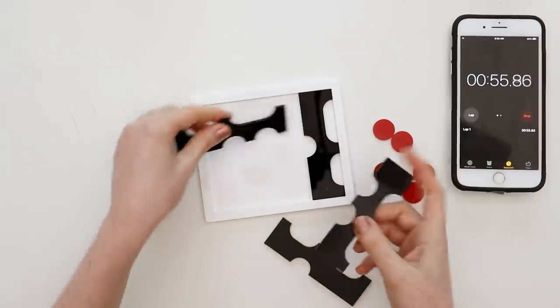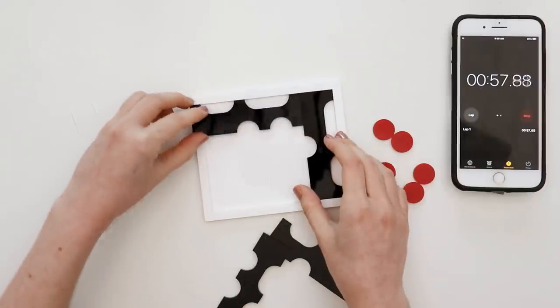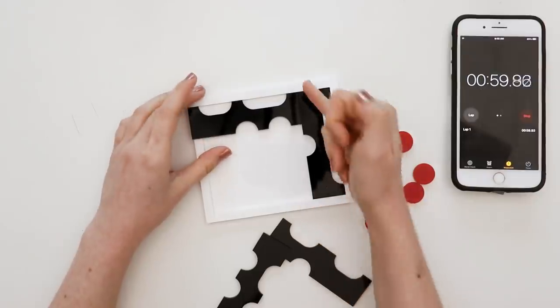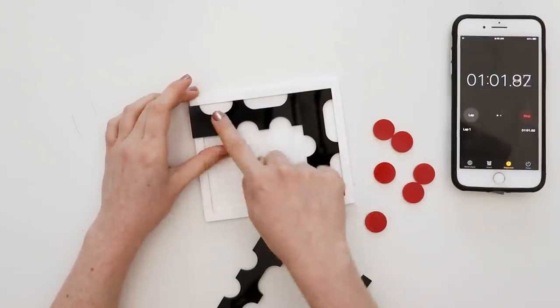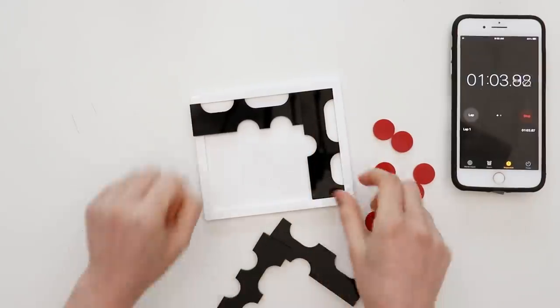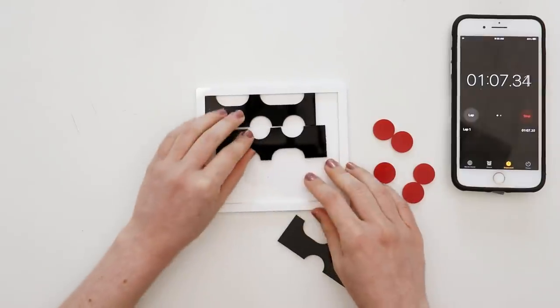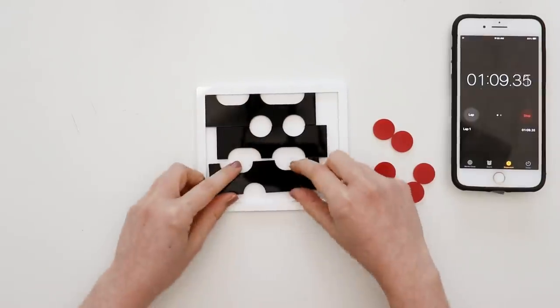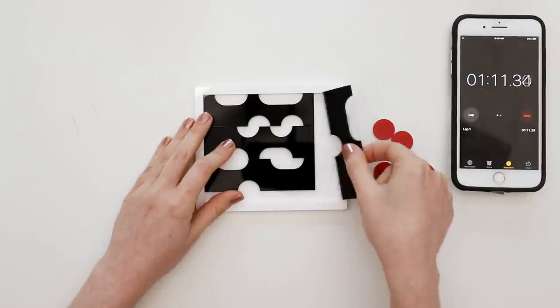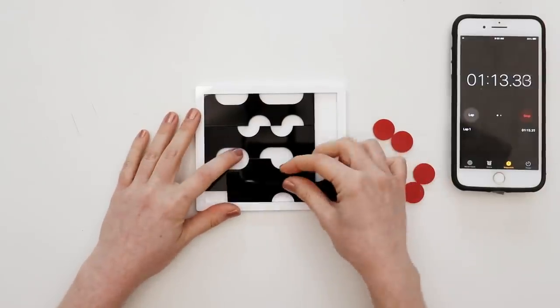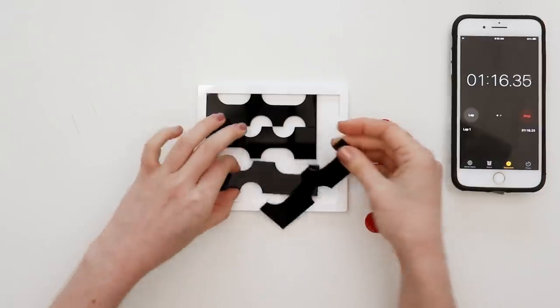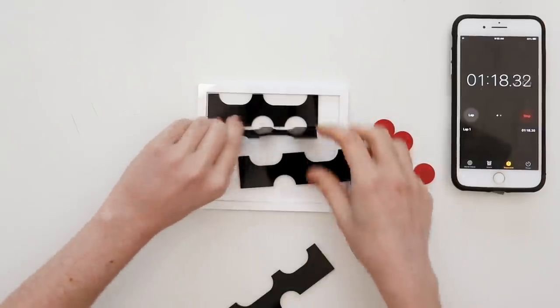So the next thought I had is what if you turn them this way? It looks like you can't have one vertical and one horizontal, because that does not fit. But what if we just put these in horizontally? That is not ever going to fit. Okay, that's not going to work.